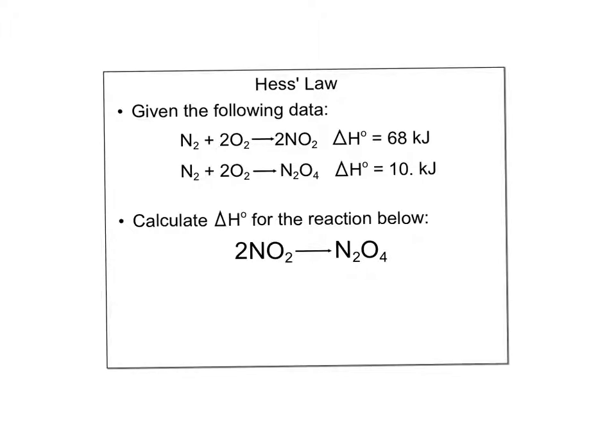Here's a typical Hess's Law problem. It says here's the following data, and they give me two reactions with the delta H value for each of those reactions. They want us to find the delta H for the reaction at the bottom. We're going to use Hess's Law to solve this problem.